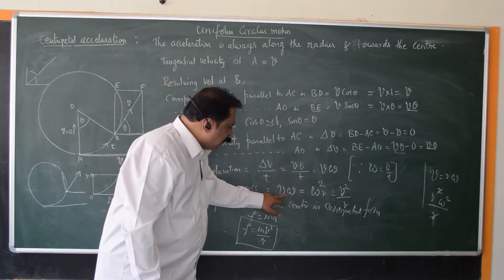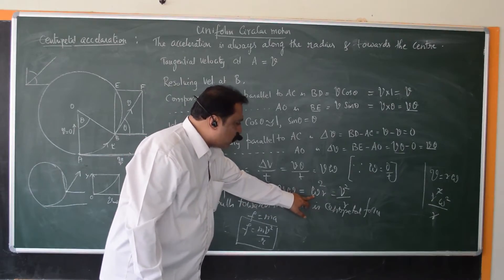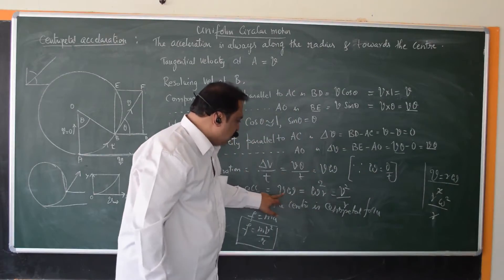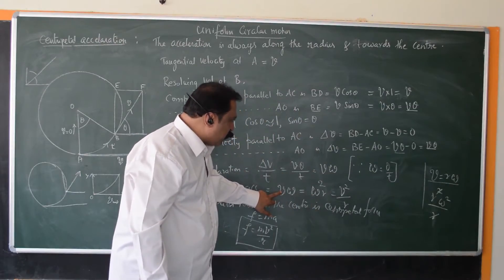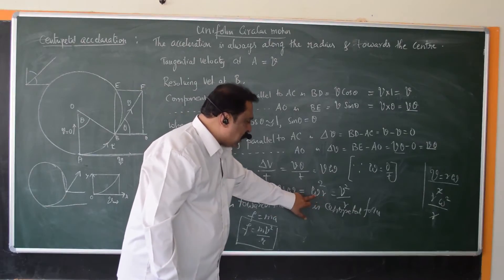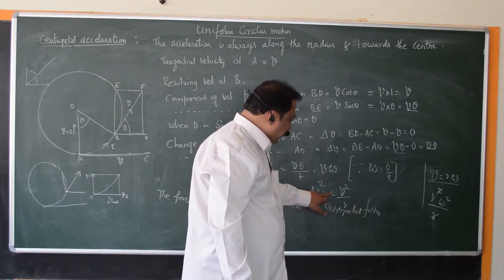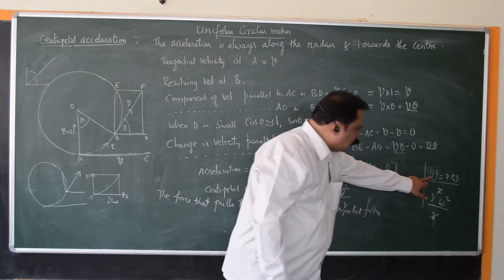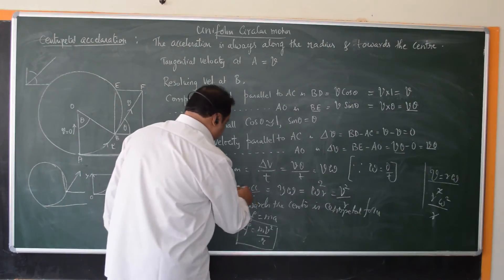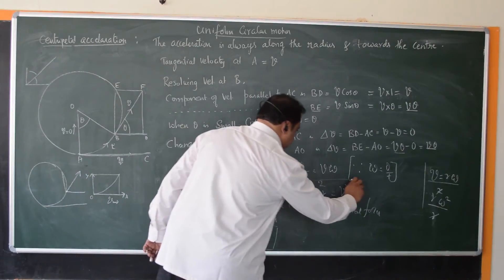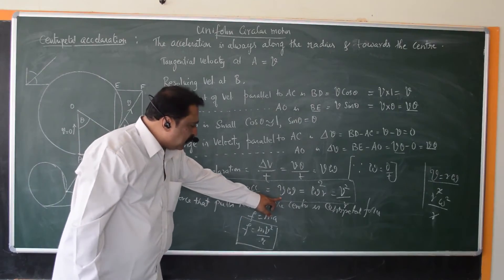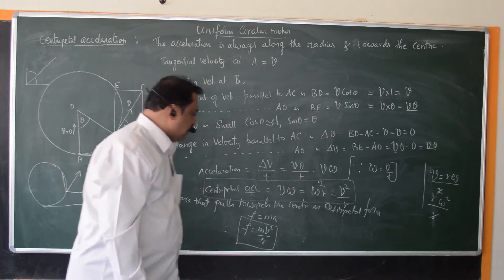Or you can also write V omega as omega square R. Because we know that V equals R omega. So substitute for V as R omega. V omega. So R omega into omega. That becomes R omega square. Or this omega square R can also be written as V square by R using the relation V equals R omega. So remember the expression for the centripetal acceleration is V omega or omega square R or V square by R.